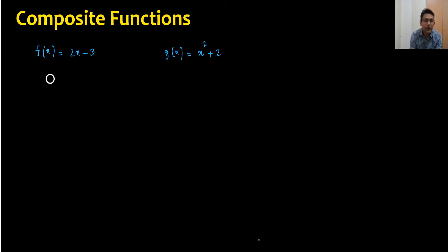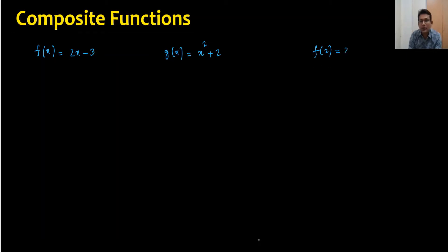When you want to find f(2), it is very simple — you substitute 2 in, so 2×2 minus 3, and f(2) = 4 - 3 = 1. So f(2) = 1. This is called the domain and this is called the range, or the value of x and the value of y, and the coordinates are (2, 1).